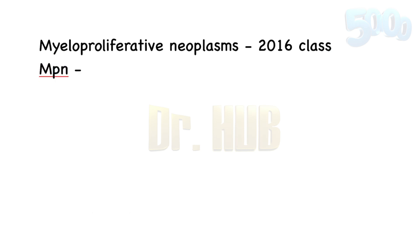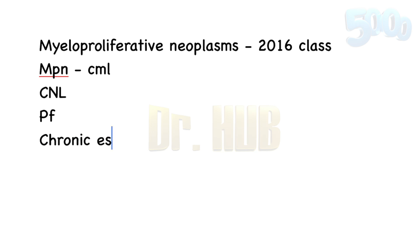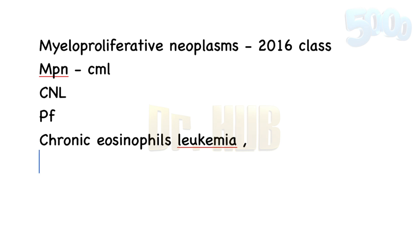There is chronic myeloid leukemia — that's BCR-ABL1. Then chronic neutrophilic leukemia, CNL. Then polycythemia vera, PV. Then PMF — primary myelofibrosis — which can be two stages: a pre-fibrotic early stage and an overt fibrotic stage. Then essential thrombocythemia. Next comes chronic eosinophilic leukemia, not otherwise specified, or NOS.